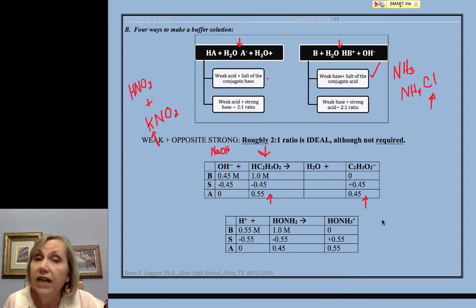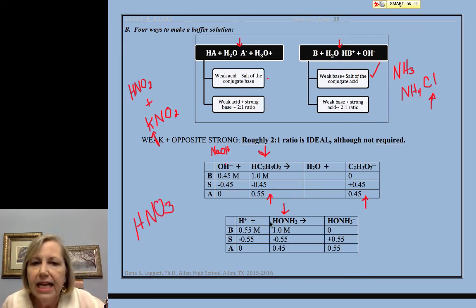that I end up with some of my weak and some of my conjugate. In other words, I have a buffer situation. Now, I could do the same case with a weak base. So this is a weak base. I could add a strong acid, maybe nitric acid, and I'm going to neutralize a portion, not all of it. But I want to leave behind some of my weak base and form some of its conjugate. So now I have a mixture of the two and that's the heart of a buffer.